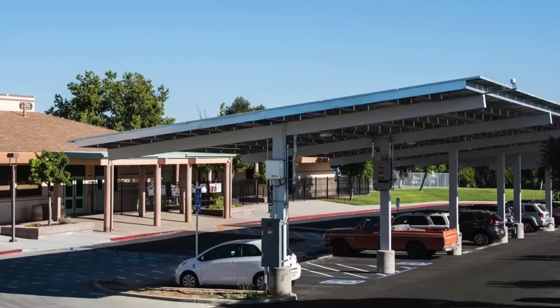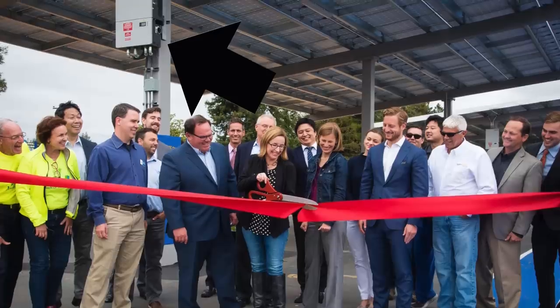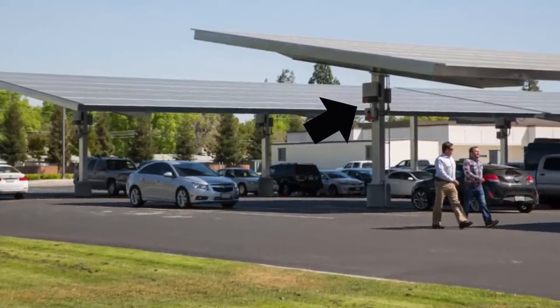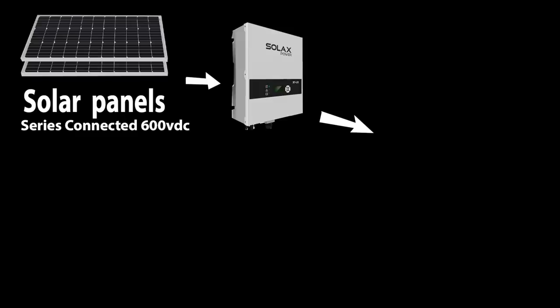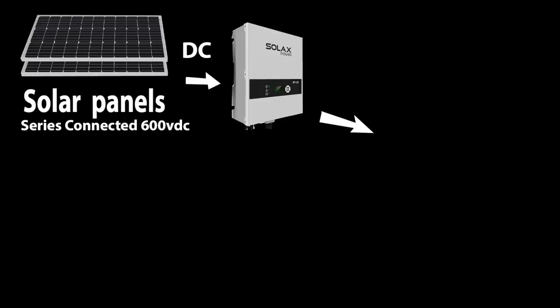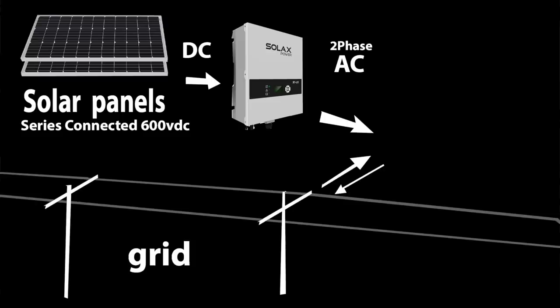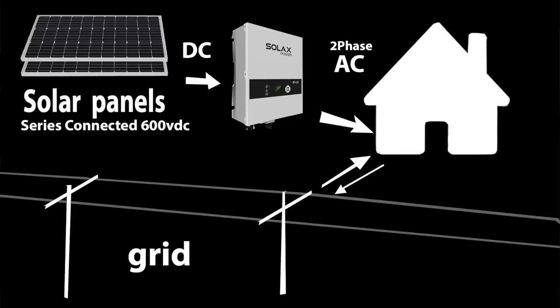Then there are the grid-tie systems. If you're in California or similar states, you might have seen these grid-tie inverters in parking lots with solar panels. These are even simpler — there's a bunch of solar panels usually run in series, up to around 600 volts, which allows them to use thin wires to connect to the inverter. The inverter converts that DC power into AC — most will convert to two-phase AC because that's what the residential grid uses.